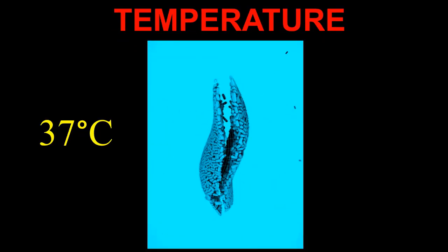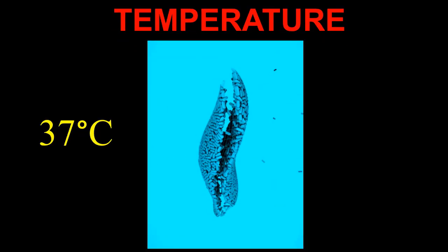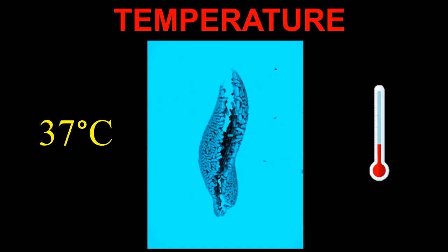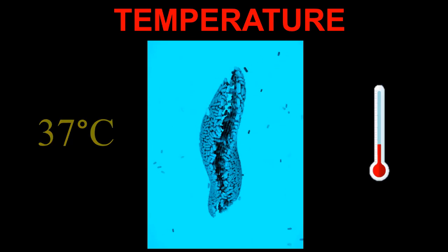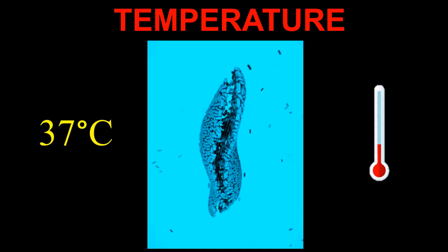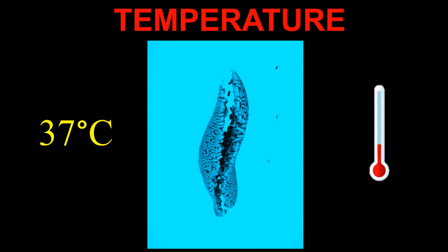Temperature: The optimum growth temperature of E. coli is 37 degrees centigrade. Therefore, it is known as a mesophile.